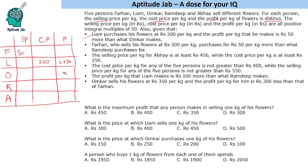Farhan sells his flowers at ₹500 per kg, so Farhan's selling price is 500. He purchases for 50 more than what Ramdeep purchases for. So let's say Ramdeep's cost price is B — then Farhan's cost price will be B plus 50.